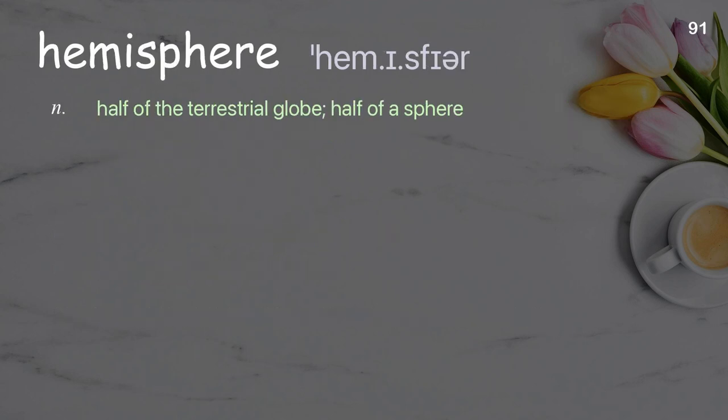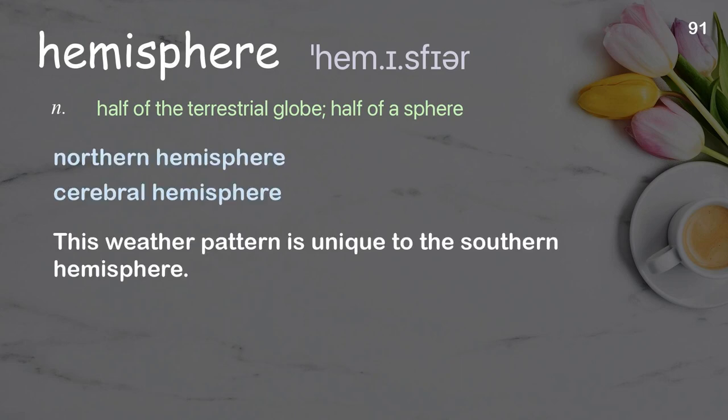Hemisphere. Half of the terrestrial globe; half of a sphere. Examples: northern hemisphere, cerebral hemisphere. This weather pattern is unique to the southern hemisphere.